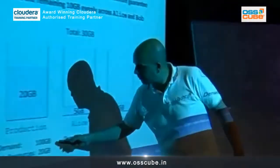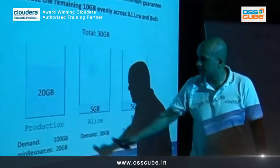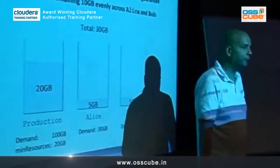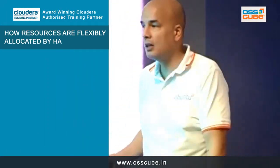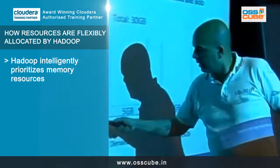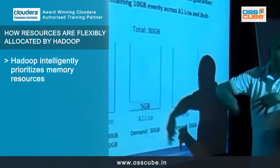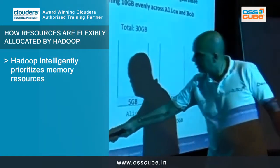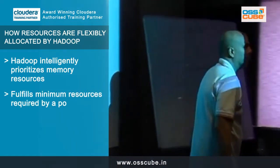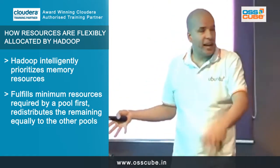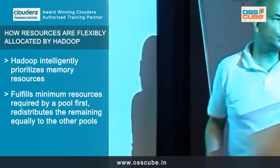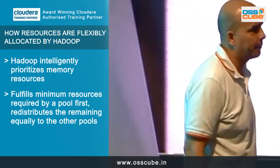So here I can say I can configure the minimum resources for this pool to be 20 GB, which is actually more than the fair share, because the fair share was originally 10. And so what Hadoop will try to do — before it serves anyone — it will try to fulfill that min resources, and then whatever you have left is then redistributed across the remaining pools.